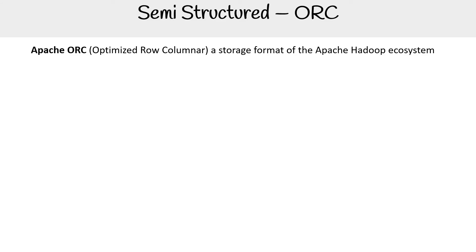Let's take a look at Apache ORC files, which stands for Optimized Row Columnar. It's a storage format for the Apache Hadoop system. It is similar to RC files and Parquet files, and is the successor to RC files — we're not going to cover RC files here.